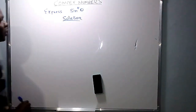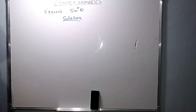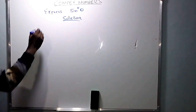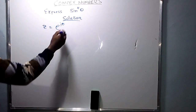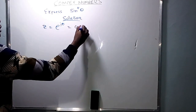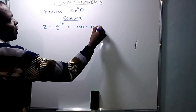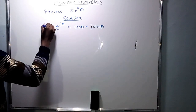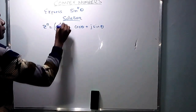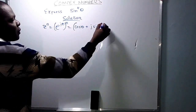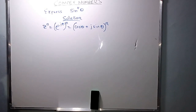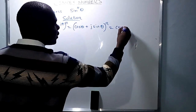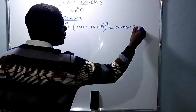So the first thing, we go to De Moivre's theorem. If you have z equals exponential j theta, then that is equal to cos theta plus j sine theta. If you raise both sides of the equation to power n, it means z raised to power n is exponential j n theta, which equals cos theta plus j sine theta all raised to power n, giving you cos n theta plus j sine n theta.